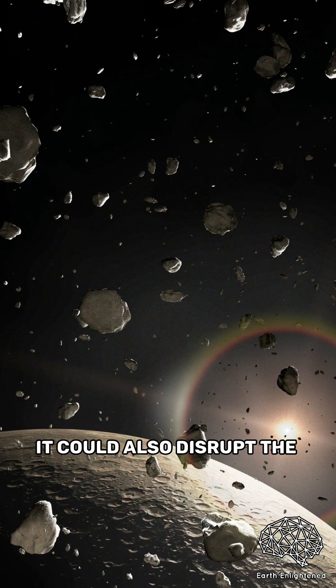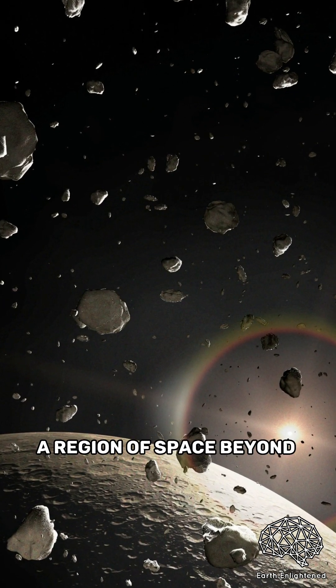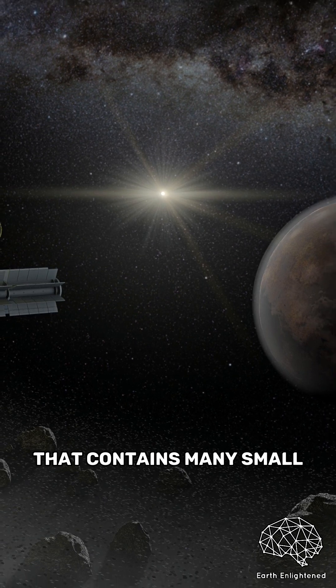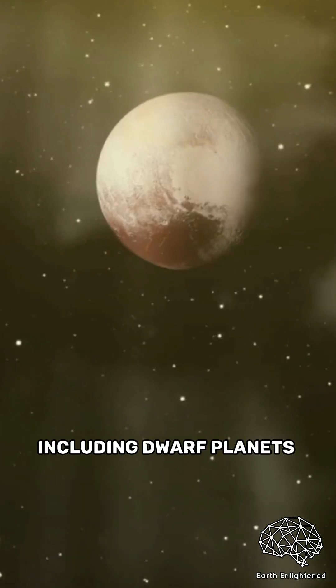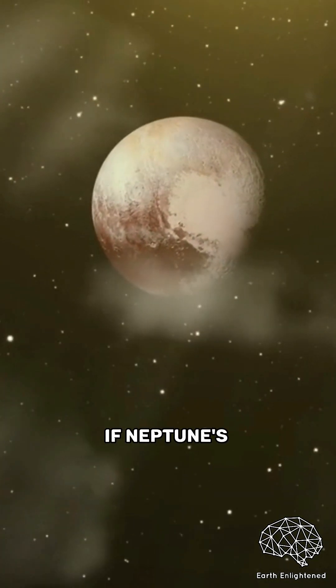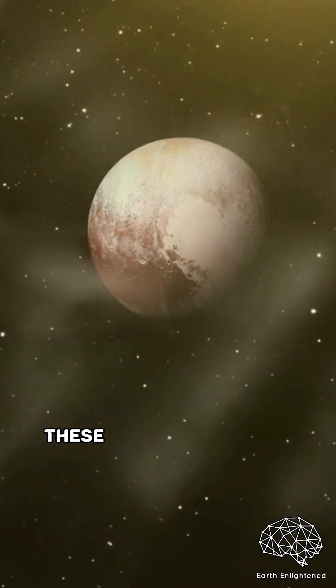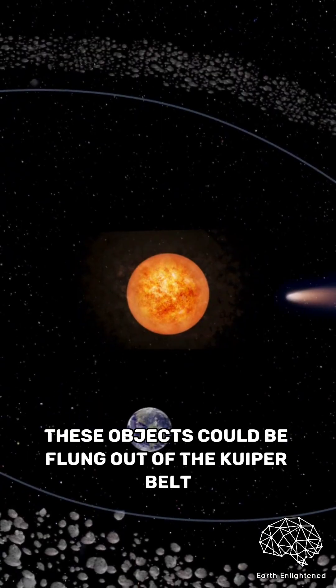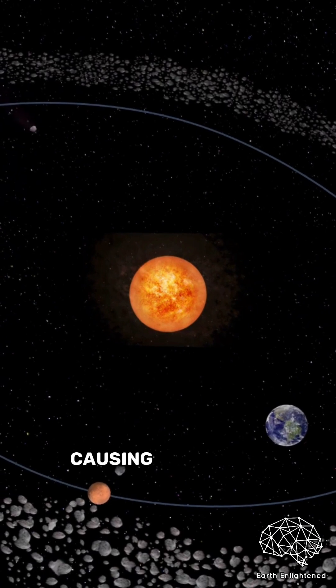It could also disrupt the Kuiper Belt, a region of space beyond Neptune that contains many small, icy objects, including dwarf planets like Pluto. If Neptune's gravitational pull weakened, these objects could be flung out of the Kuiper Belt and into the inner solar system, causing collisions.